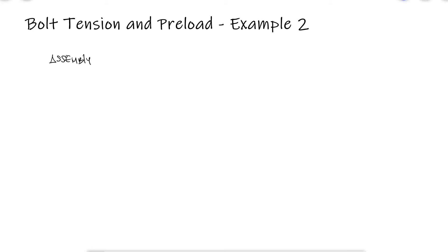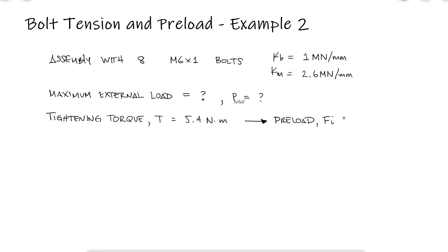For a bolted assembly with 8 lubricated M6x1 bolts, the stiffness of each bolt is 1 MN per millimeter, and the stiffness of the members is 2.6 MN per millimeter at each bolt. What is the maximum external load that this joint can be subjected to if each nut has been tightened using a 5.4 Nm torque, and the preload caused by that tightening accounts for 62.5% of the maximum load each bolt can be subjected to.